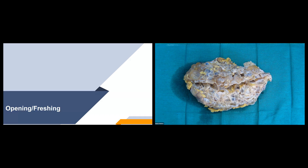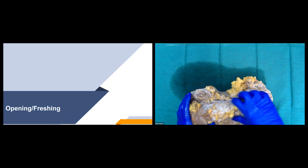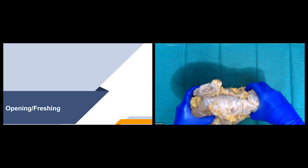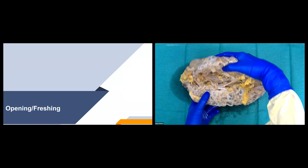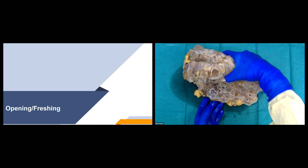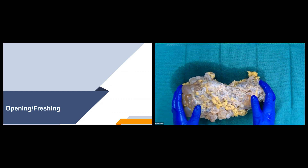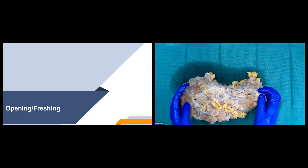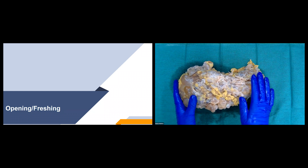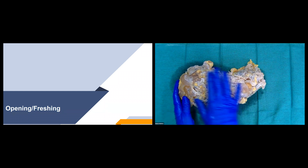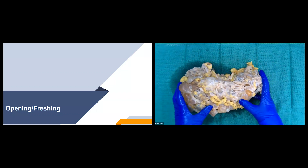Now we'll talk about opening and grossing these specimens. We first want to take the weight of the specimen before cutting, because as soon as we cut into it, a lot of the liquid from the cysts will come out and change the weight. Once weighed, we'll make a few cuts perpendicular to the hilum. For these cases, we don't usually need to ink the outside since they're not out for malignancy — but if there's any suspicion for malignancy, we would ink the perinephric soft tissue resection margin, which would be the whole exterior side.